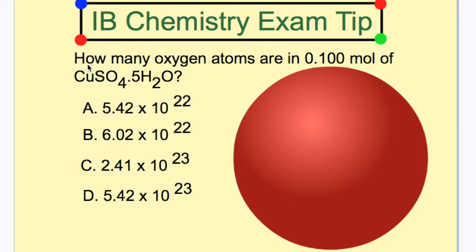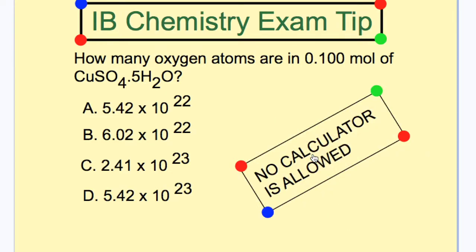Today we look at this multiple choice question. How many oxygen atoms are in 0.1 mole of copper sulfate 5H2O? Remembering that this is a multiple choice question and that no calculator is allowed.